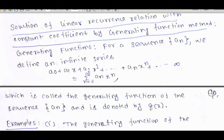First of all we have to know what is called a generating function. For a sequence a_n, we define an infinite series. If we start the sequence from n equals 0, we have the first term a_0, second term a_1, third term a_2, and so on. The infinite series a_0 plus a_1*x plus a_2*x^2 and so on, written in compact form as the summation from n=0 to infinity of a_n * x^n, is called the generating function of the sequence a_n, denoted by G(x).